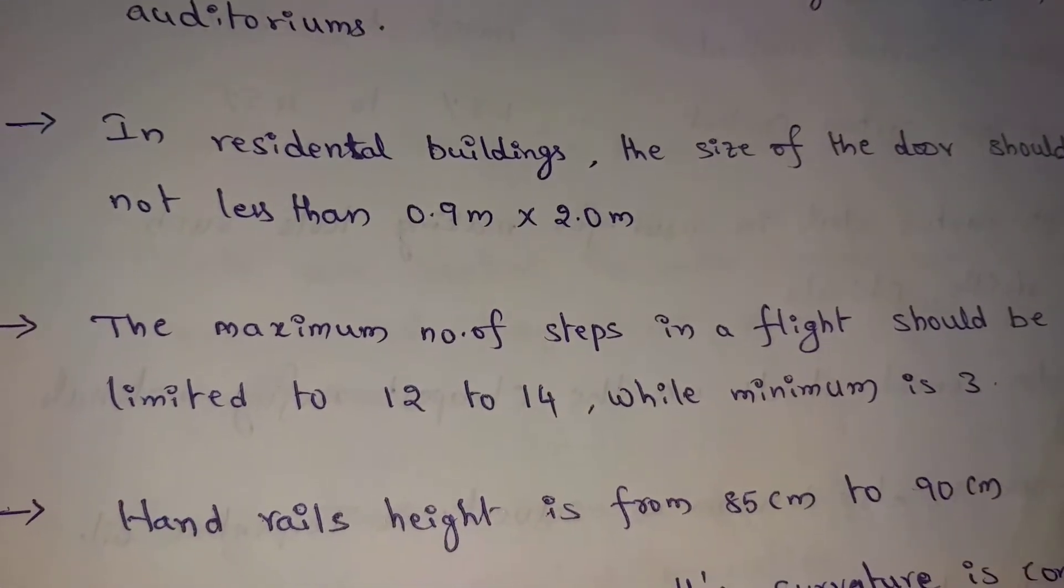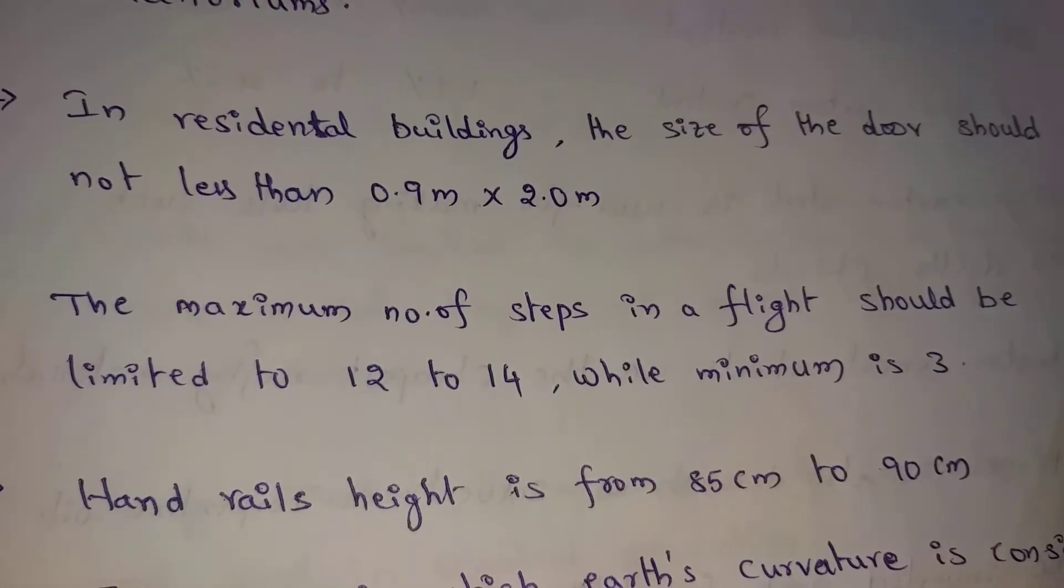The maximum number of steps in a flight should be limited to 12 to 14 while minimum is 3 numbers. If we choose one flight in the staircase, that one flight will be 12 to 14 steps. Maximum 14 steps in one flight. There are minimum 3 steps, maximum 14 steps.